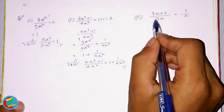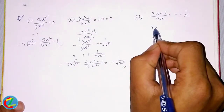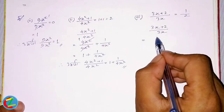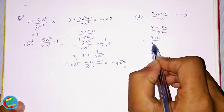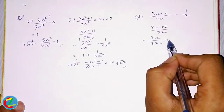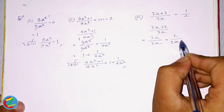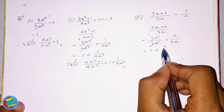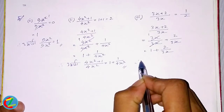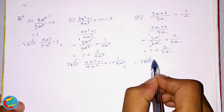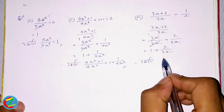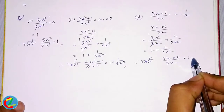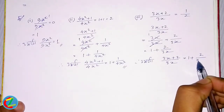4x² is equal to 1 plus 1 minus 1 plus 1 plus 2x², 2x times 336. So we can get 1 plus 2 divided by 36.